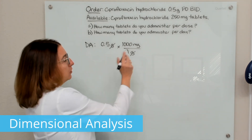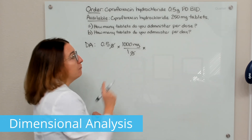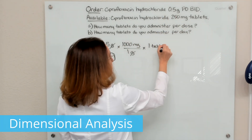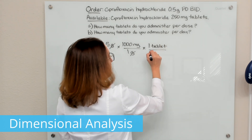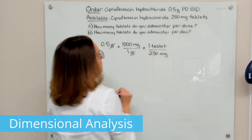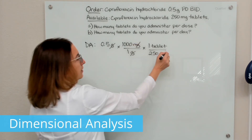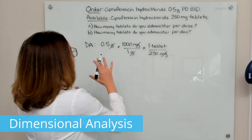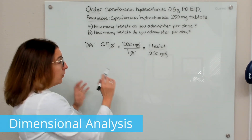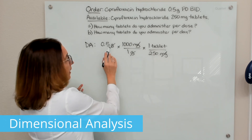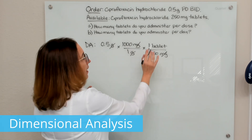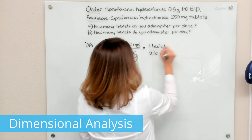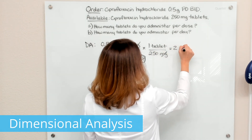Now I'm ready to multiply times our available concentration, which is one tablet, and each tablet contains 250 milligrams. So my milligrams cross off, and I'll be left with tablets, which is what I was looking for. With dimensional analysis, it's important that you set up everything correctly so that your like units cross off and you're left with the unit of measure that you're looking for. So if you multiply this out, we end up with two tablets.